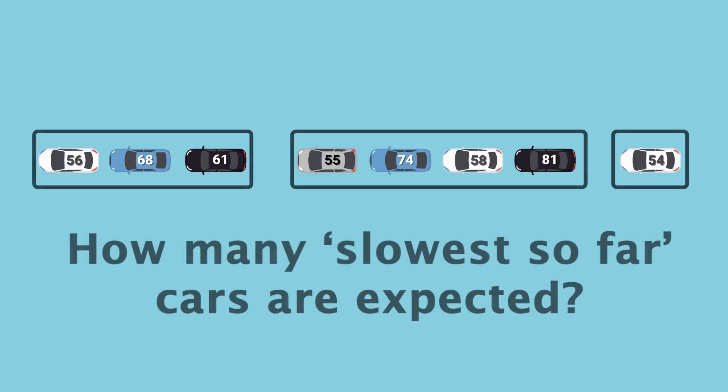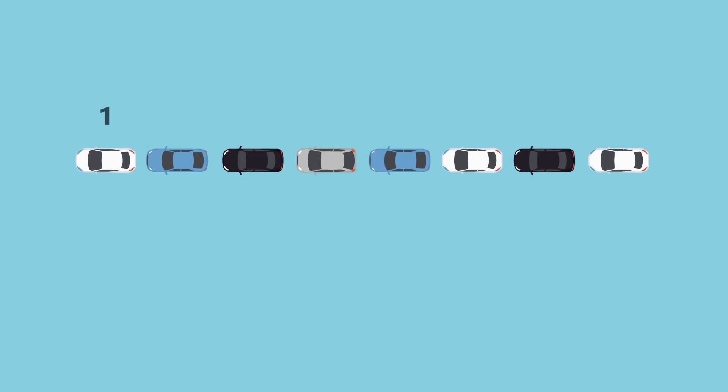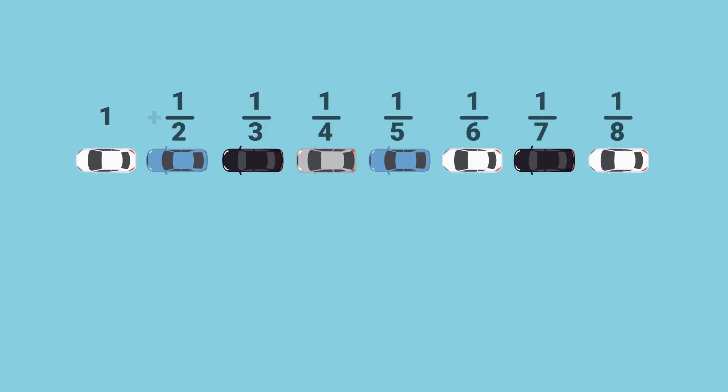The new question is: how many 'slowest so far' cars do we expect given a total number of cars N? Because that's how many groups we expect to form. The first car is a 100% chance of being the slowest so far, so the expected number of groups is one if we stop there. Then there are two options for the next car — it's either faster or slower than the first — so there's a 50% chance of it being the slowest so far, meaning we add one half to the overall expected number of groups. The next car will be the slowest of the first three one third of the time, increasing the expected number of groups by that amount. Continuing this pattern and adding the results, we get the harmonic series, telling us how many groups are expected to form for a set of N cars.